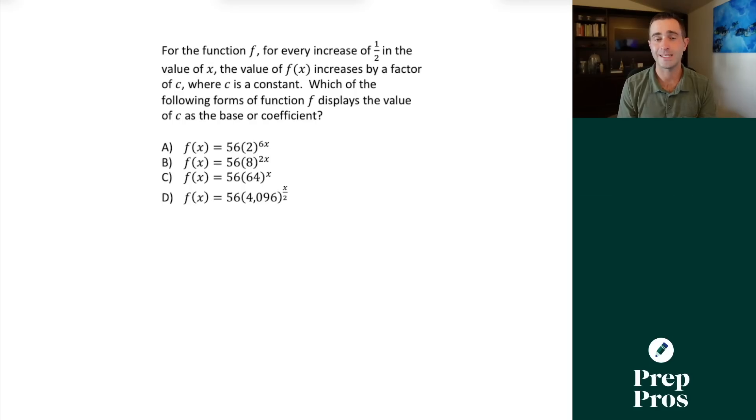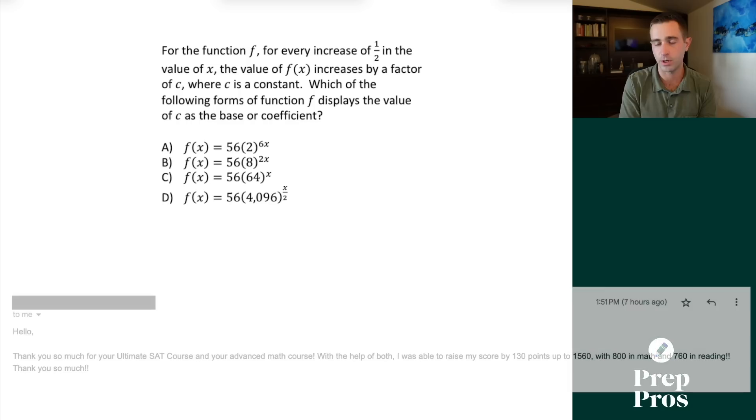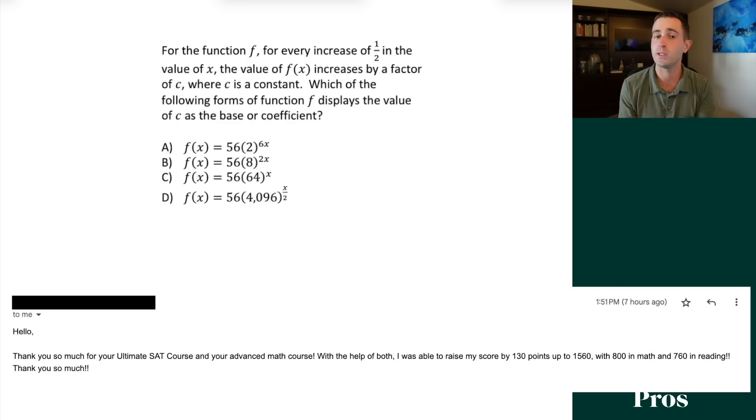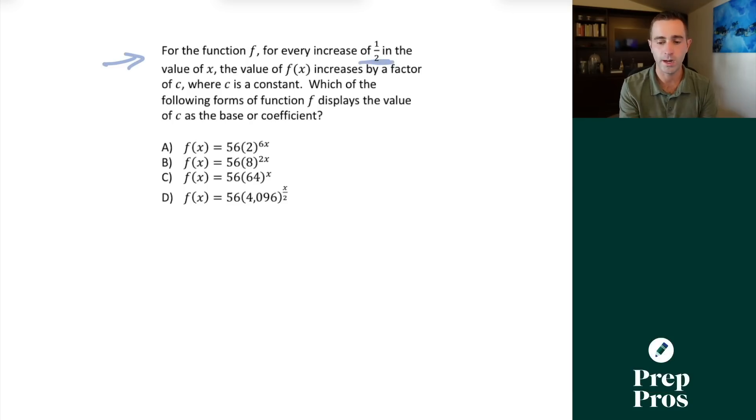Now the next thing that you're going to see on your digital SAT is interpreting constants in exponential functions. There's a handful of varieties of these, all of which are covered in our advanced math course, but we're going to go over one here which really stumps a lot of students. So here we see for the function f for every increase of one half in the value of x, the value of f of x increases by a factor of c. Which of the following forms of function f displays the value of c is the base or coefficient? So we need to make sure we're understanding what the SAT is asking us.